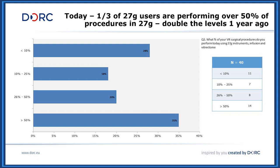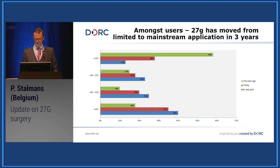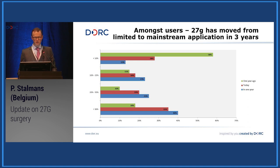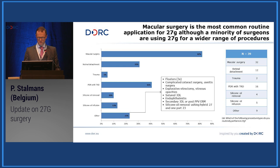In three years, 27-gauge has gone from a niche to a more mainstream application, though it's mainly used for macular surgery. If you need silicone oil, fluid-air exchange, or more complicated cases, there is still room for larger gauge. Personally, I use 27-gauge as my standard and switch to 23-gauge for difficult cases or when using silicone oil — for me, it's a perfect combination. Gaurav's study can be summarized: surgeons using 27-gauge in more than half of their cases has doubled in one year, but instrument rigidity and illumination can still be improved.